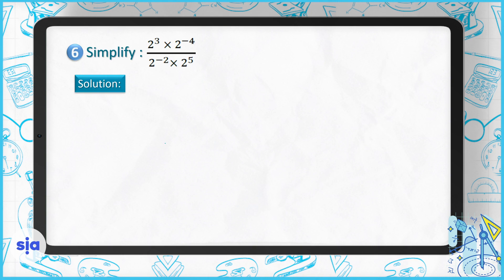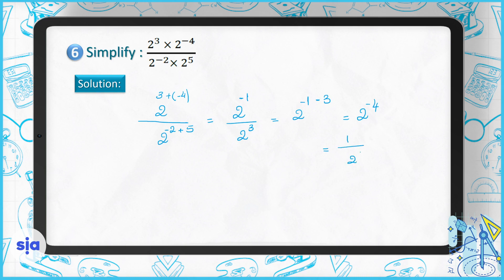Question 6: simplify the expression. All bases are 2, so for the numerator add the powers: 3 plus negative 4 equals negative 1. For the denominator add the powers: negative 2 plus 5 equals 3. So we have 2 to the power of negative 1 over 2 to the power of 3. Dividing, we subtract powers: negative 1 minus 3 equals negative 4. The result is 2 to the power of negative 4, which equals 1/16.